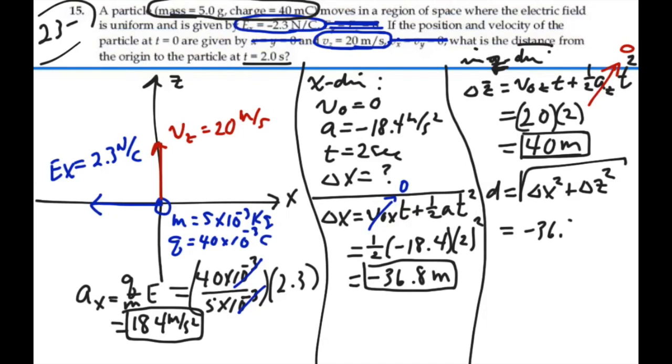Negative 36.8 squared plus 40 squared, square root of all that. And what is that? 54.4 meters.